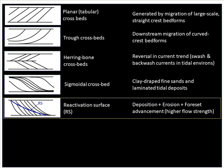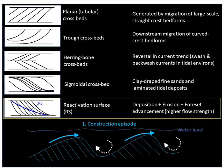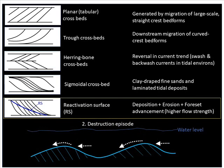Here's a quick example of how that happens. In the first episode, you have construction — that is, deposition — with currents moving from left to right. At the same time, there is another weaker phase of tide moving in the opposite direction, but not strong enough to erode what is being deposited. When the tidal current going from left to right gets weakened, you then have a destruction phase, where the subtle opposite-trending tidal energy becomes dominant and erodes part of what has been deposited.